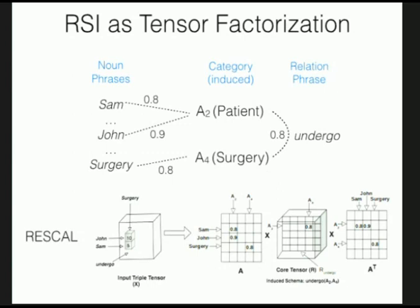The factorization breaks the tensor into components. Multiplying them back gives a reconstructed tensor X', and our goal is to minimize the reconstruction error — make X' as close to X as possible.